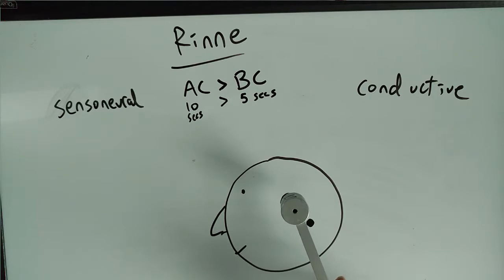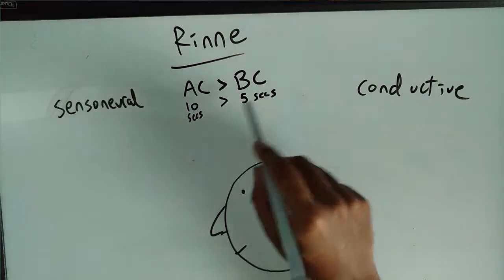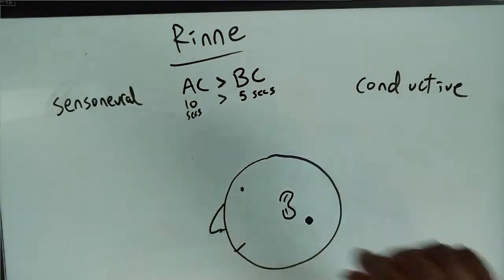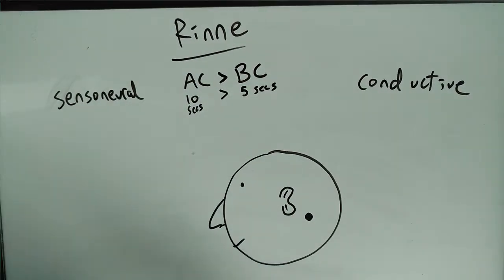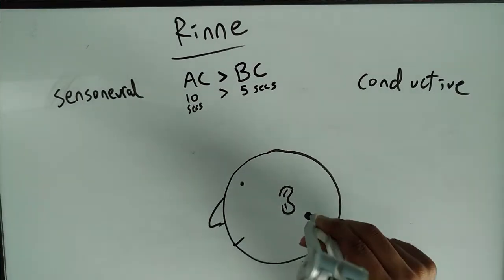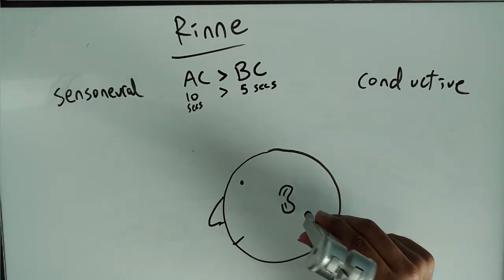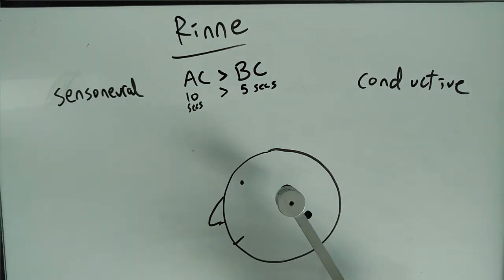These are hypothetical numbers. So a normal person, you put it on the bone behind their ear, let's say they hear it for 5 seconds or they feel it for 5 seconds. After 5 seconds they don't hear it, and you put it next to their ear. They're hearing it, so this goes on for 10 seconds. After 10 seconds, they'll stop feeling it. That's a normal person.